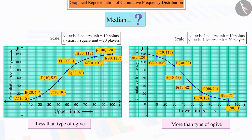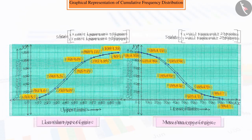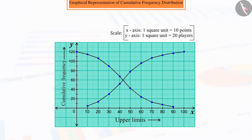Let's see. If we draw both types of Ogives on the same graph, then these two intersect each other at a point.